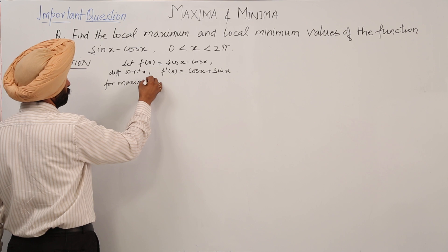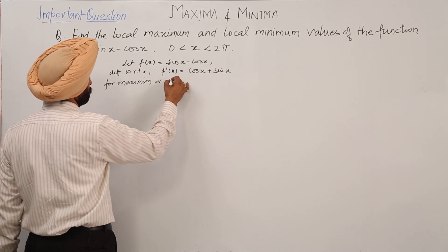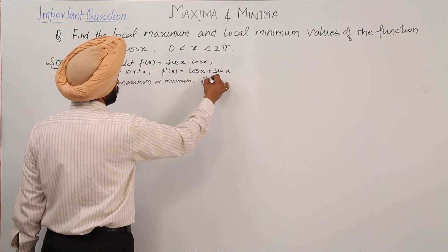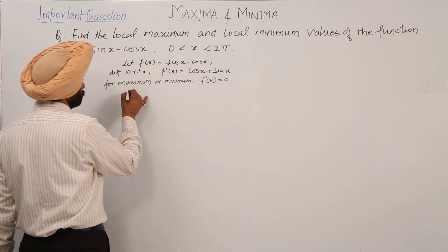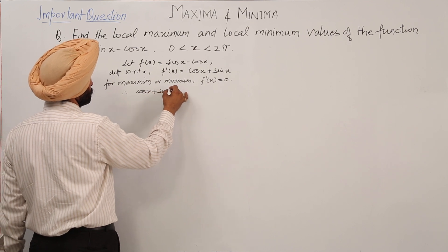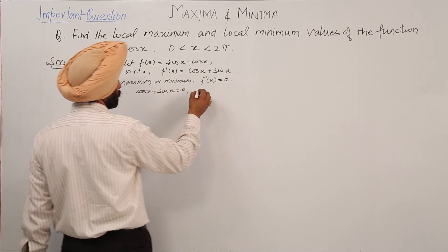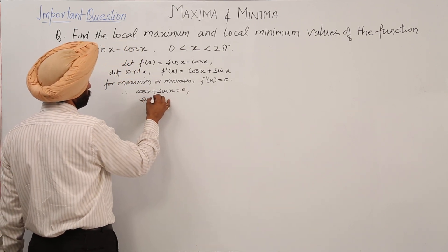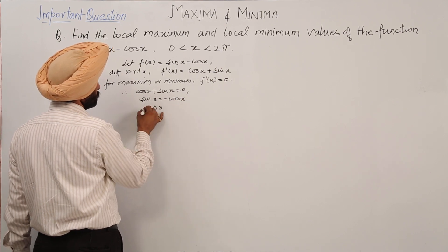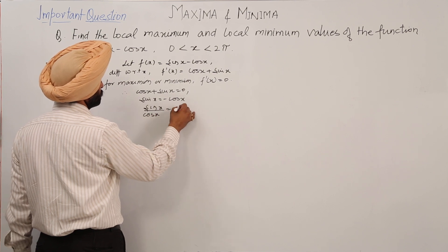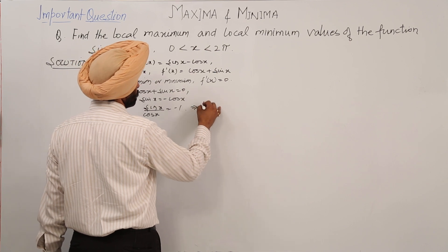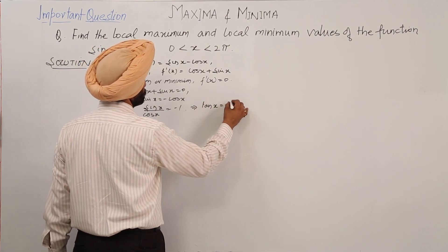For maximum or minimum, f'(x) is equal to 0. Therefore, cos x plus sin x is equal to 0. So sin x is equal to minus cos x, which gives sin x upon cos x is equal to minus 1, or tan x is equal to minus 1.